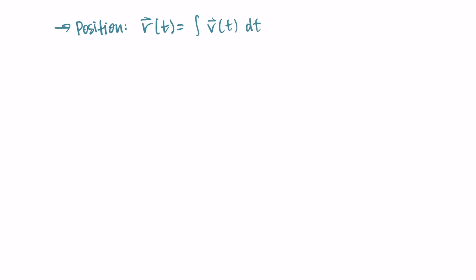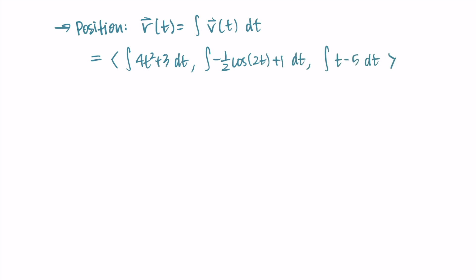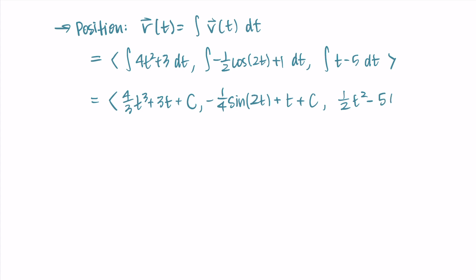If you're feeling confident, you might want to pause and try finding the position on your own. Repeating this process, r(t) = ∫v(t) dt, integrating each component. In the x-component, the antiderivative of 4t² + 3 gives 4/3 t³ + 3t + c₁. In the second component, the antiderivative of -½cos(2t) + 1 gives -¼sin(2t) + t + c₂. In the third, the antiderivative of t - 5 gives ½t² - 5t + c₃.